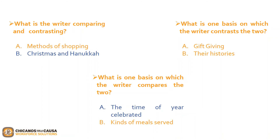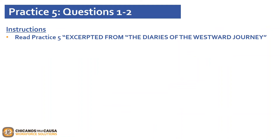Now that we have completed these questions, let's go ahead and move on to Practice 5. Please pause the video and read Practice 5, excerpted from The Diaries of the Westward Journey. This passage can be found on page 69. Once you have completed reading the passage, go ahead and click play.